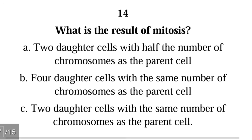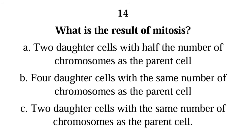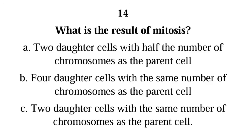Question 14: What is the result of mitosis? A) two daughter cells with half the number of chromosomes as the parent cell, B) four daughter cells with the same number of chromosomes as the parent cell, C) two daughter cells with the same number of chromosomes as the parent cell. The correct answer is C). The parent cell begins with 46 chromosomes and the two daughter cells each end up with 46 chromosomes.